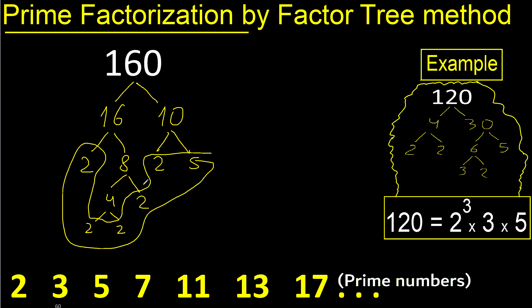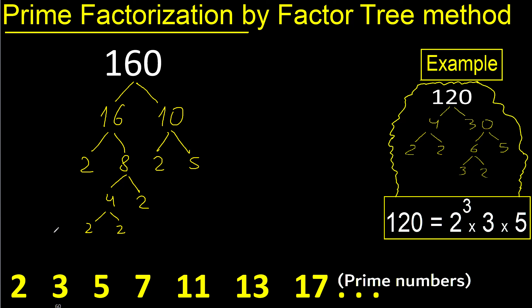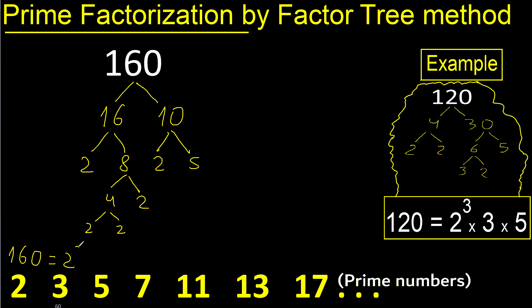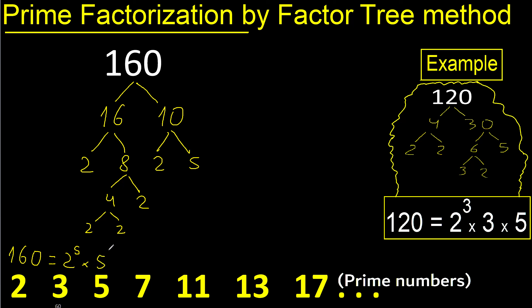Collecting the prime numbers. Therefore, 160 equals 2 to the exponent 5 — since there are five 2s — times 5 to the exponent 1. Wonderful.